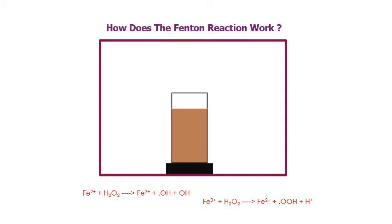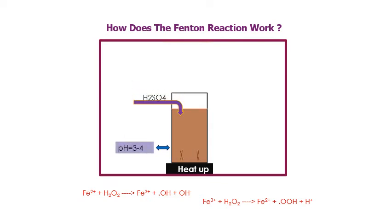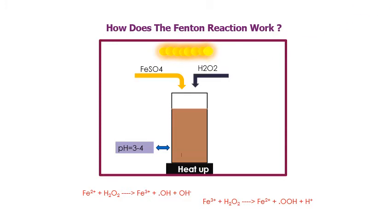How does the Fenton reaction work? Iron and hydrogen peroxide are capable of oxidizing a wide range of substrates and causing biological damage. The reaction is complex and capable of generating both hydroxyl radicals and higher oxidation states of iron. First, we heat up our sample to 40°C, then add sulfuric acid to the solution to lower the pH level to between 3 and 4. Control pH several times and ensure the solution acidity has equalized, then turn on the UV lamps on the device. Pour a solution of ferrous sulfate into the solution you wish to oxidize, and then slowly add hydrogen peroxide.